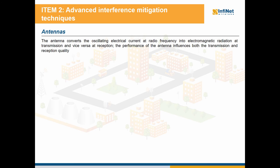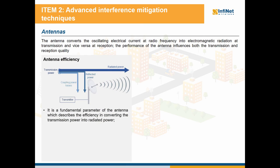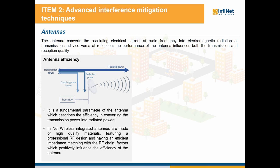Next, we'll discuss about antennas and how important they are in ensuring a good transmission quality. The antenna has the scope of converting the electrical current into electromagnetic radiation at transmission and vice versa at reception. The performance of the antenna influences both the transmission and reception quality. We begin with the antenna efficiency, which is a fundamental parameter describing the efficiency in converting the transmission power into radiated power. Infinite Wireless integrated antennas are made of high quality materials featuring a professional RF design and having an efficient impedance matching with the RF chain, which positively influences the antenna efficiency.